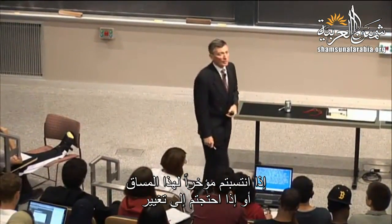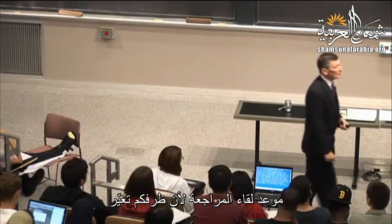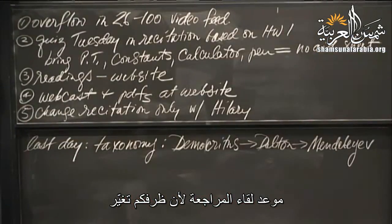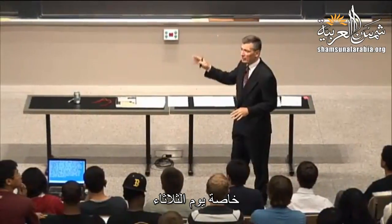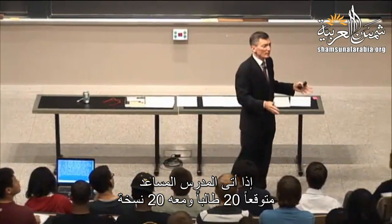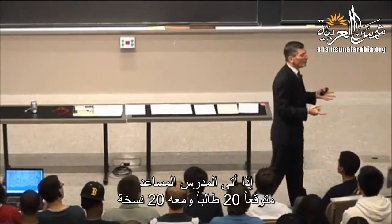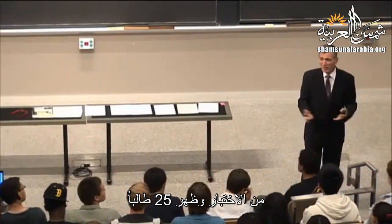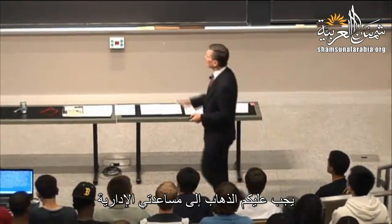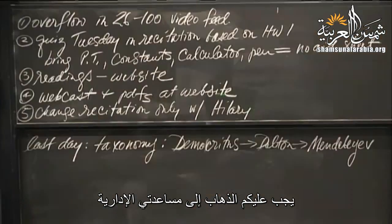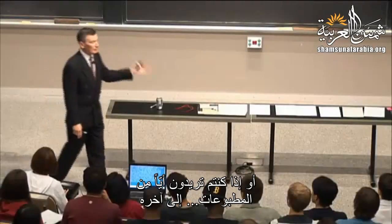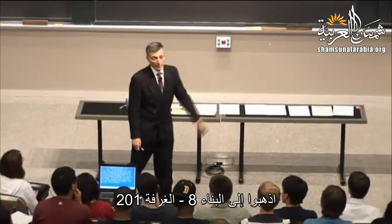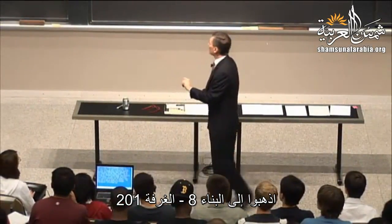If you're new to the class or need to change your recitation section, do not simply go to the other class. We're trying to regulate enrollment, particularly on Tuesdays. If the TA shows up expecting 20 students and has 20 copies of the quiz and 25 people show up, that's not a recipe for success. You must go to my administrative assistant, Hillary Sheldon, in order to change recitation. It's just down the hall in Building 8, Room 201.